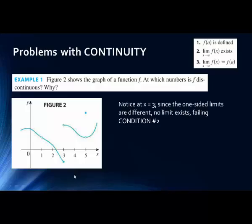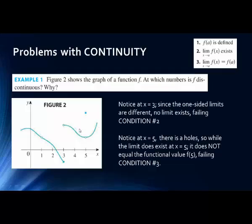When we hit x equals 5, the limit exists, and f(5) is defined — that dot is right there — so condition 1 is met. As we approach 5 from both directions they meet at the hole, so condition 2 is satisfied. But notice the limit as x goes to 5 does not equal f(5), which is at a different y-value. So this fails condition 3 because the limit doesn't equal the functional value.